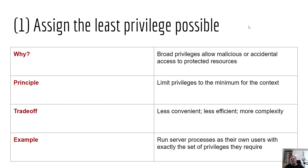Assign the least privilege. This is all about assigning the least amount of privilege to any user, process, or whatever entity — only exactly what is needed to perform a certain operation. If you don't do that, there's a great chance that the user can do too much, which could lead to a vulnerability or even a greater exploit at some point in the future.